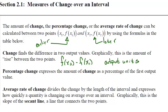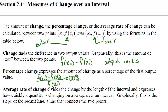Percent change we've looked at before when we were talking about exponential functions. To calculate percent change, take the output later minus the output earlier — like we do with change — but divide by the output earlier to get a ratio. Multiply by 100% to convert to a percent. The units cancel out, so the units are just percent.